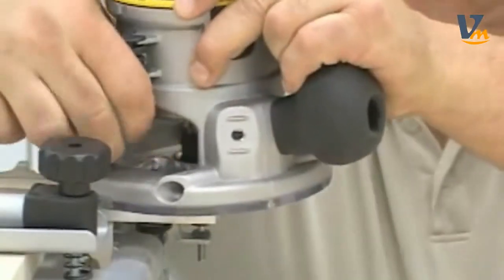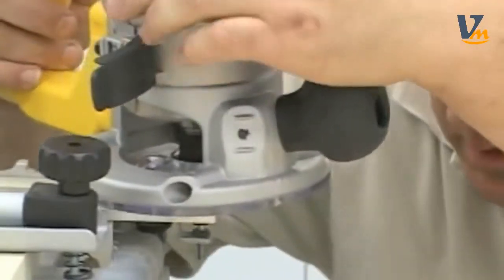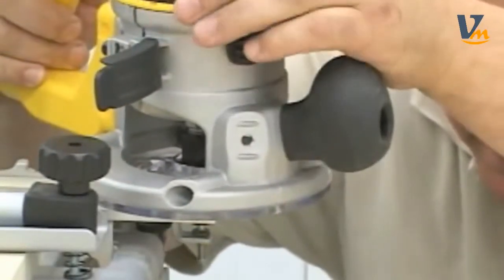Using the factory set depth stop on the jig, the dovetail bit is set to the proper exposure to route the joint.